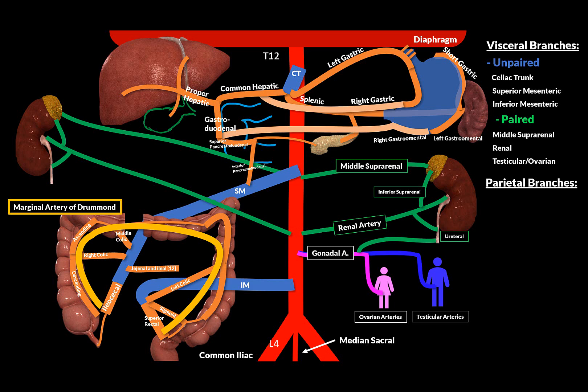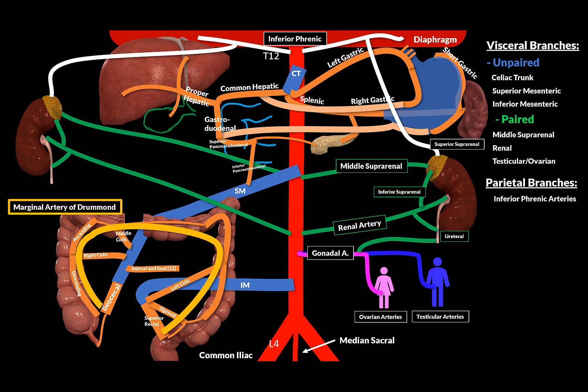That's it for the visceral branches. The parietal ones are easy. First is the inferior phrenic artery — whenever you see the word phrenic, you're talking about the diaphragm, so this one supplies the diaphragm. The inferior phrenic artery also gives off the superior suprarenal arteries. Finally, the last one is the lumbar arteries, which arch backwards for the posterior and lateral abdominal muscles, as well as the skin on the backside and a few branches for the spinal cord.